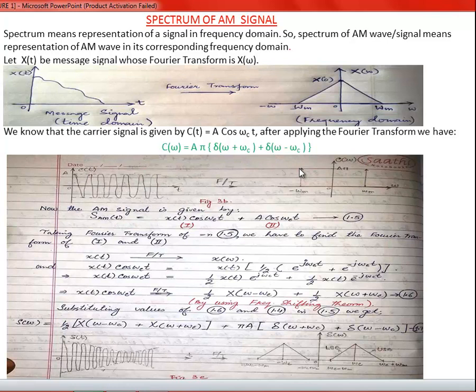The AM signal is given by S_AM(t) = X(t)·cos(ω_c·t) + A_C·cos(ω_c·t). This is part 1 and part 2. Taking the Fourier transform of equation 1.5, we need to find the Fourier transform of part 1 as well as part 2.